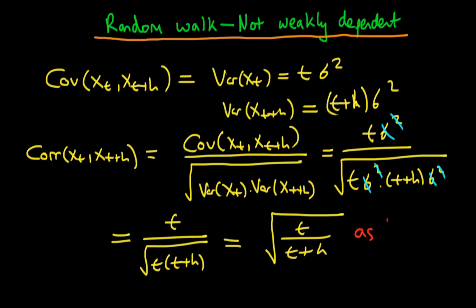We notice that as h goes to infinity, then the correlation between xt and xt plus h is going to tend to 1. This is in contrast to a process which would be weakly dependent, whereby the correlation tends to 0.